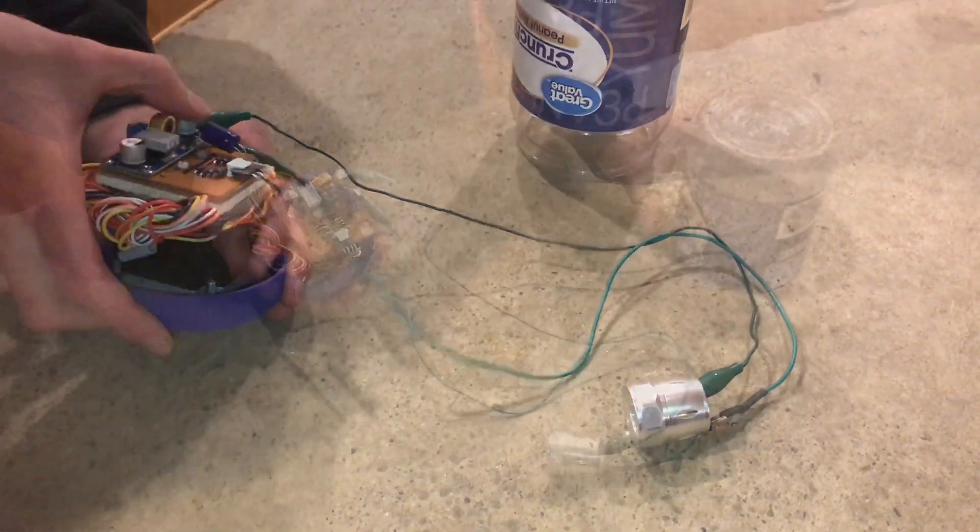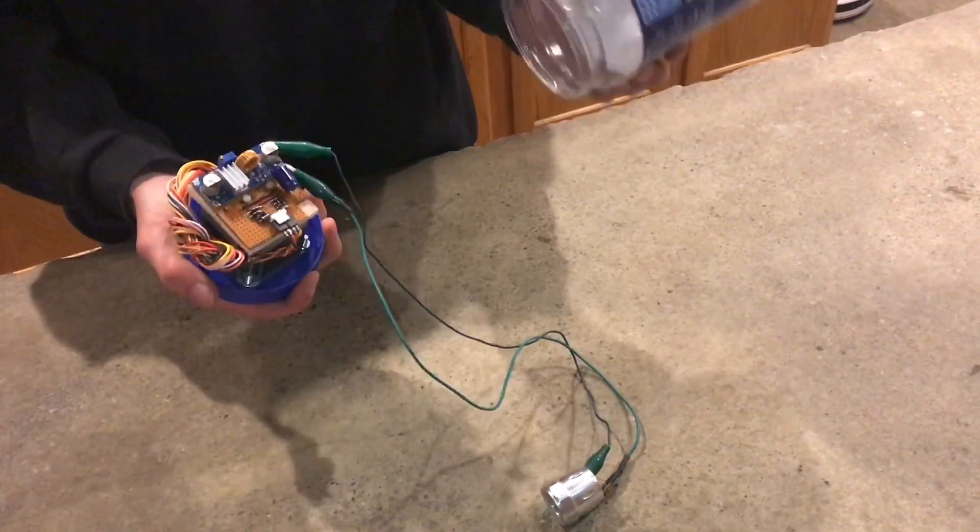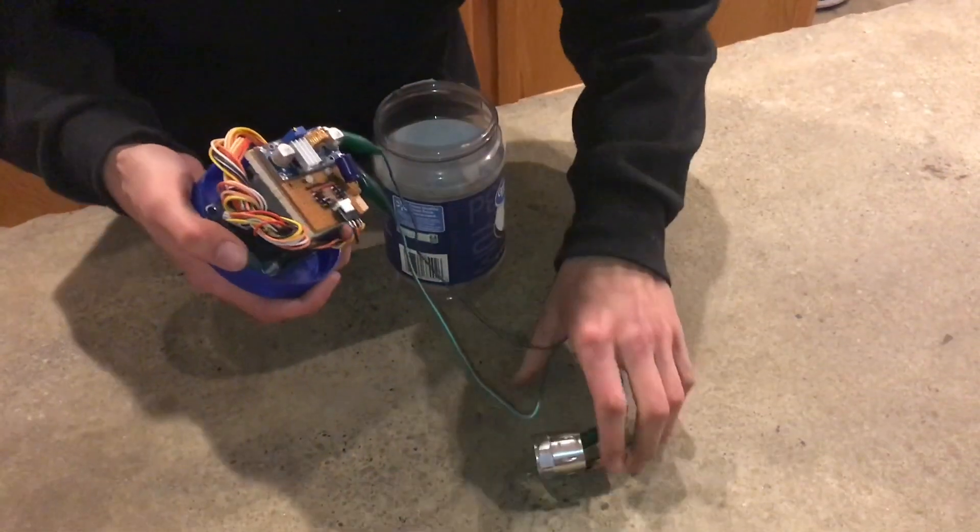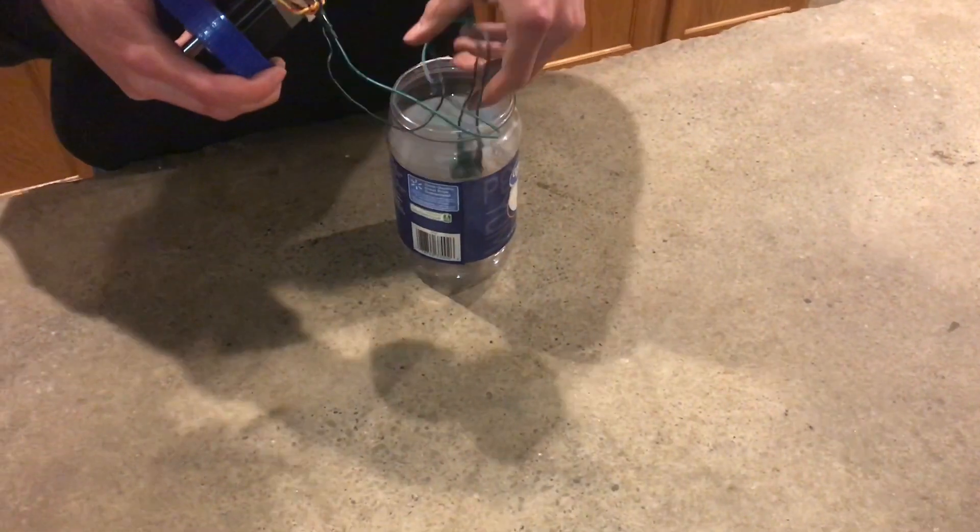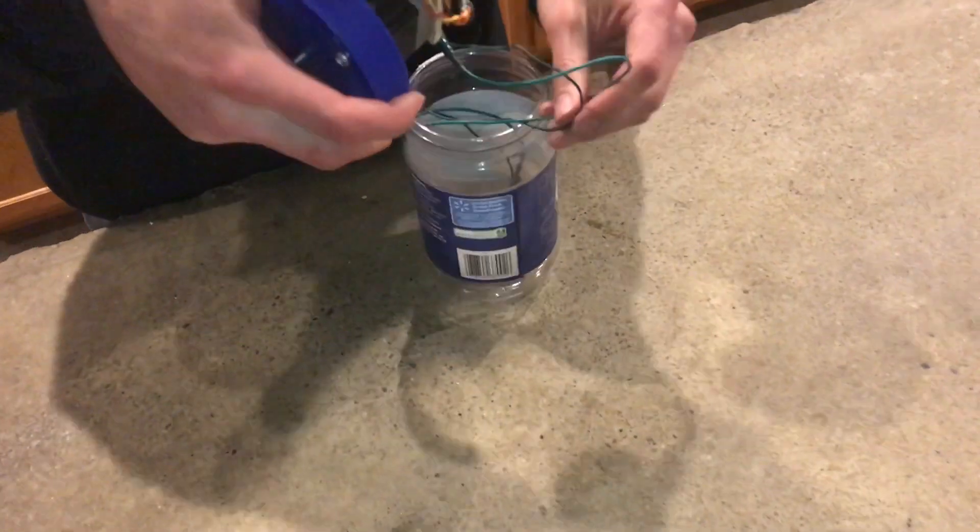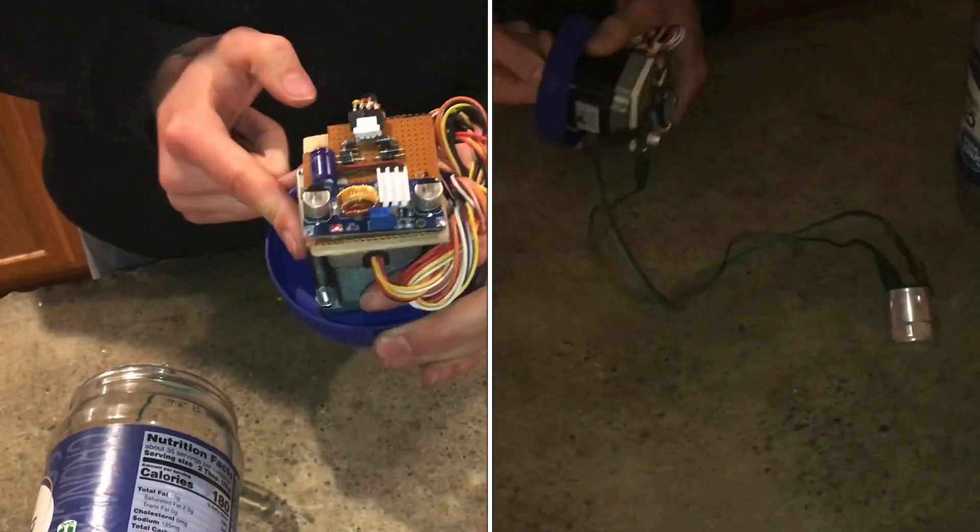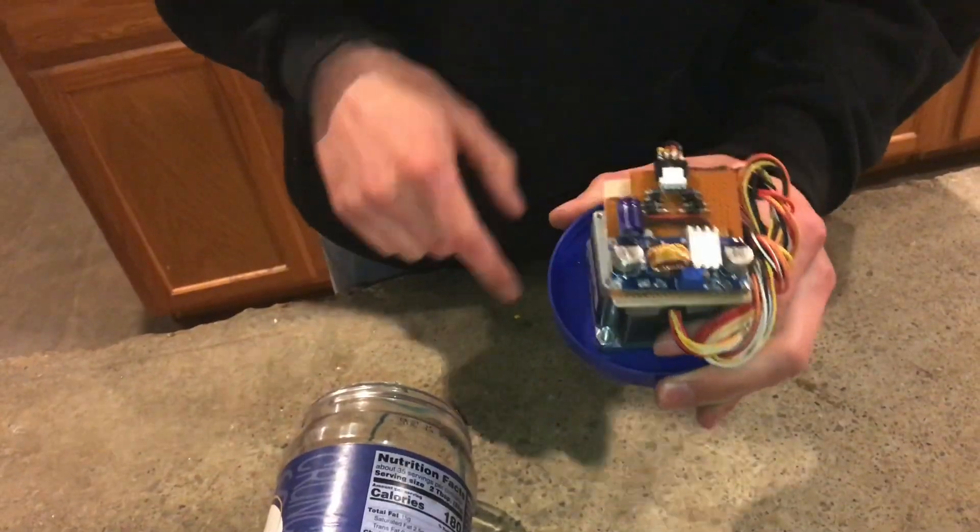And then to make it weatherproof, you can just get a plastic container that's large enough to hold all the components. Well, hope you enjoyed learning how to make a weatherproof generator out of a stepper motor and some electronics.